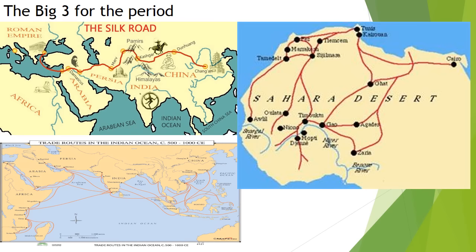For the Big Three: the top left is the Silk Road network — you can see where it began at the edge of the Roman Empire and where it ends, or starts, at Chang'an, the old capital of the Chinese Empire. On the far right are the Trans-Saharan caravan routes — 'trans' once again meaning 'across,' so Trans-Saharan means across the Sahara Desert.